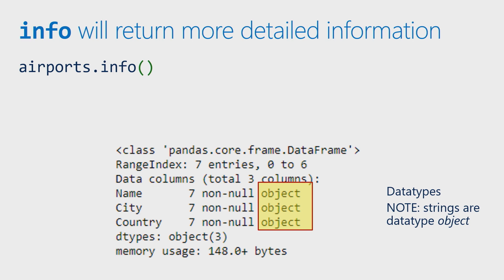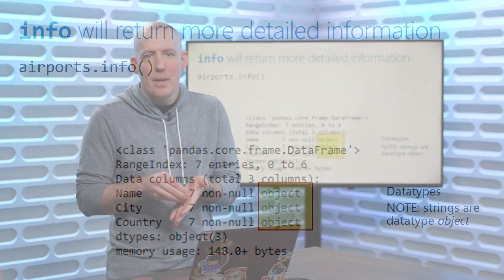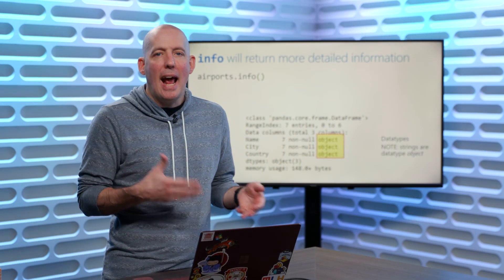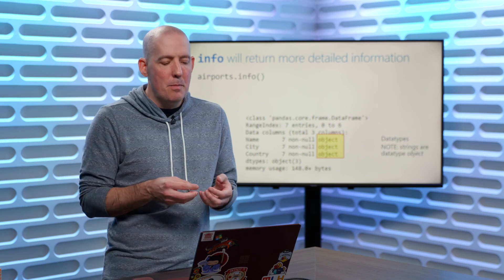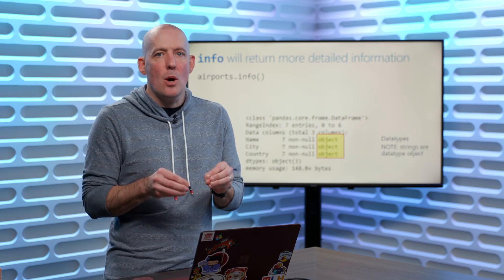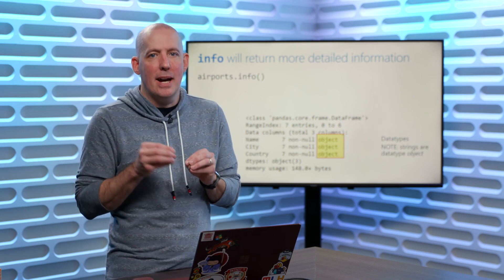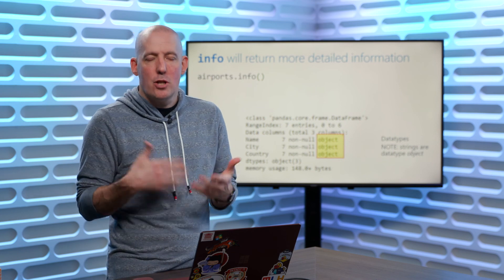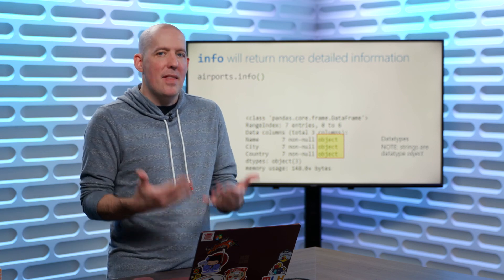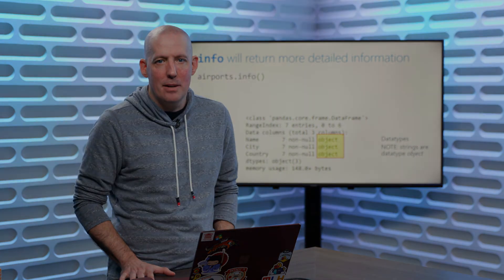Info also indicates the data types — keep in mind that a string is an object in this parlance. So by using head, tail, shape, and info, you can get a good picture of what's going on inside your DataFrame. Let's now turn our attention to the code that actually makes all of this magic happen.